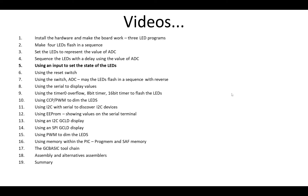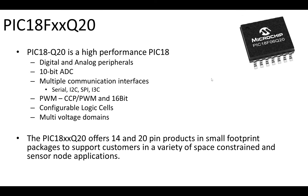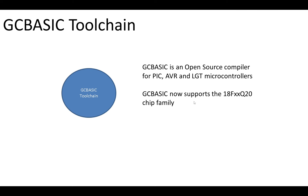In number five, we're actually going to use an input to set the state of the LEDs — relatively simple, just introducing small concepts about input. We've seen lots of outputs with LEDs and ADC inputs, but now we're going to see something that's either on or off. The Q20 is a PIC 18F with lots of inputs and outputs, an ADC, communication interfaces, and pulse width modulation, coming in 14 and 20 pin packages. GC Basic is an open source compiler that supports these chips.